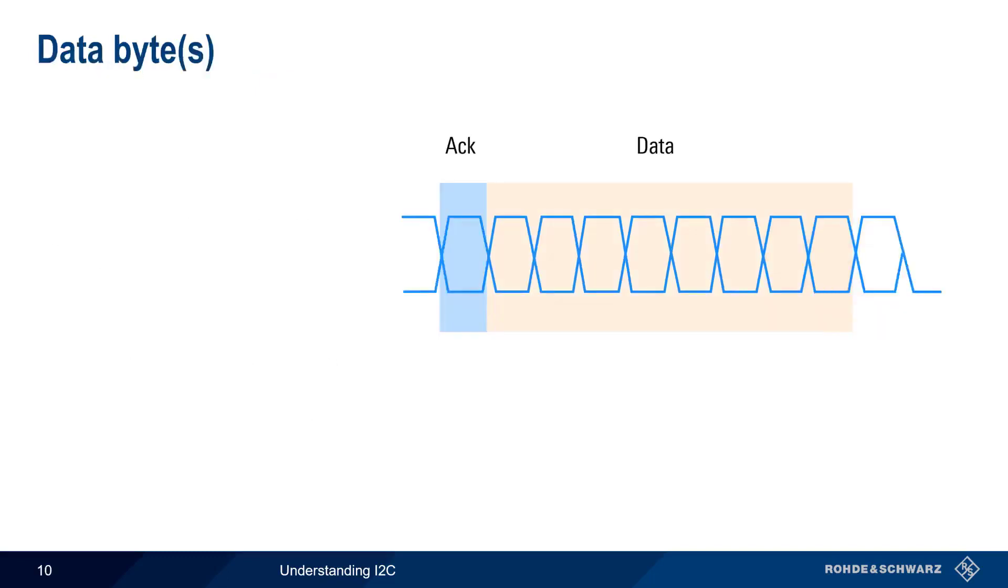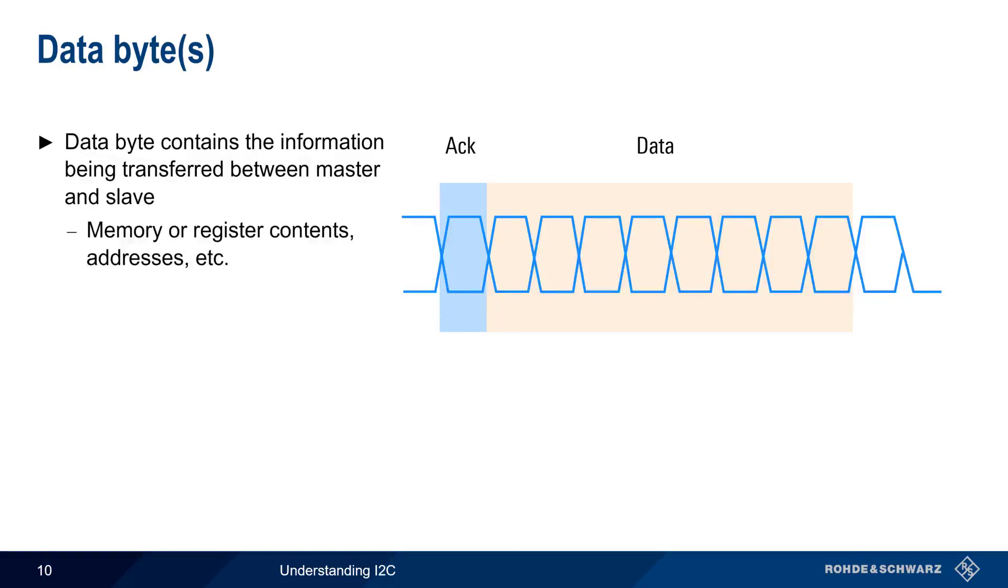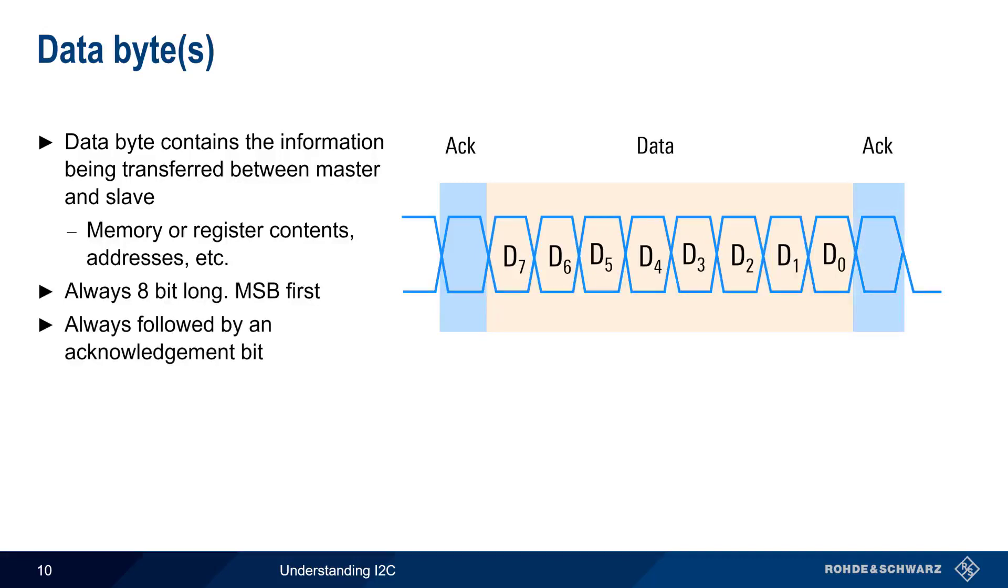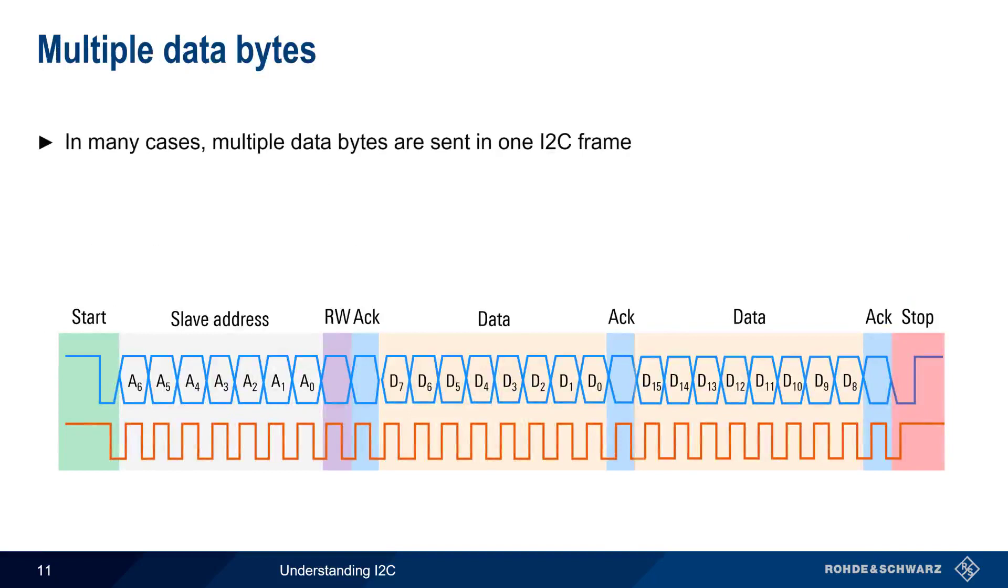The address ACK bit is followed by the data byte, which is the actual information being transferred between the master and the slave. Although this is often the contents of a memory address or register in the slave device, this may be an address location itself. Data is always sent as 8-bit bytes in I2C, with the most significant bit first. Every transmitted byte is followed by an ACK bit, which is set to zero by the receiver when the data has been properly received. In many cases, multiple data bytes are sent within a single I2C frame. Additional bytes are simply concatenated onto the previous byte, although note that each data byte must be individually acknowledged.